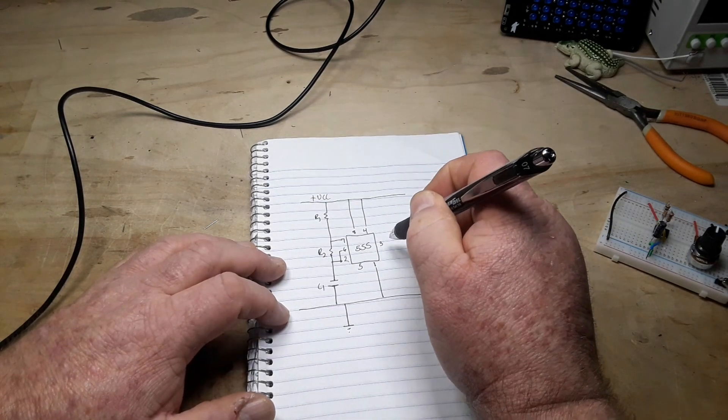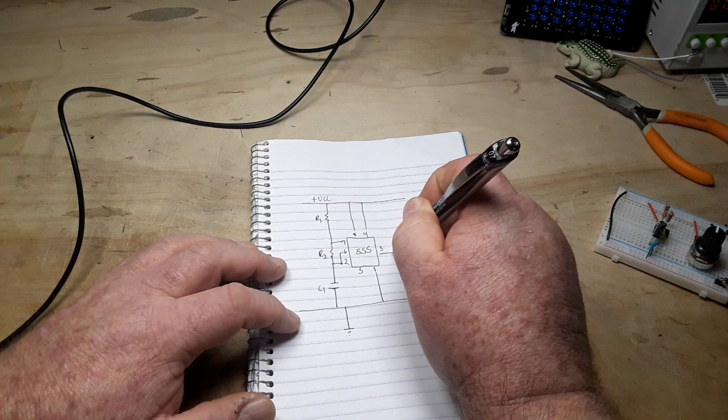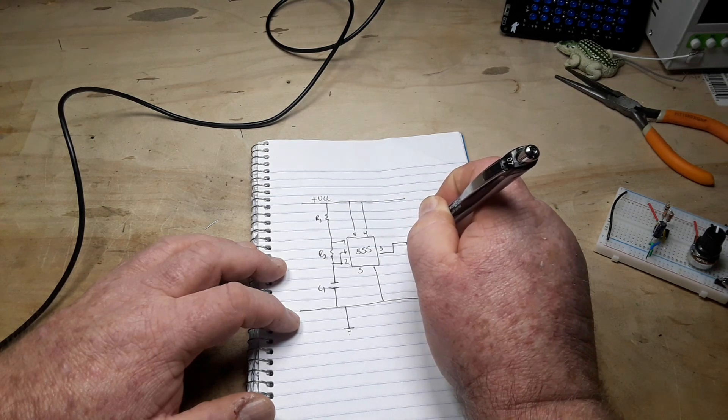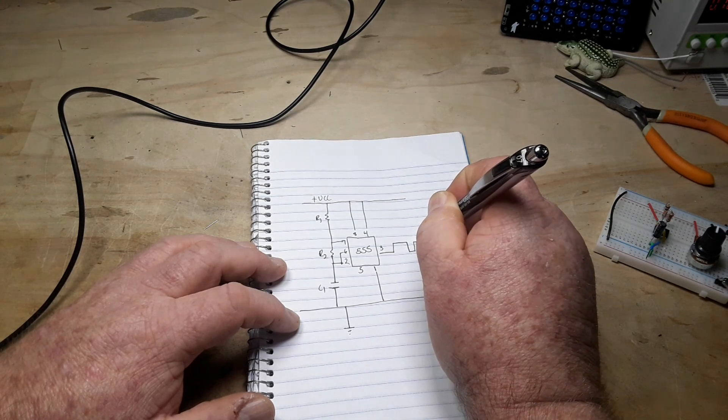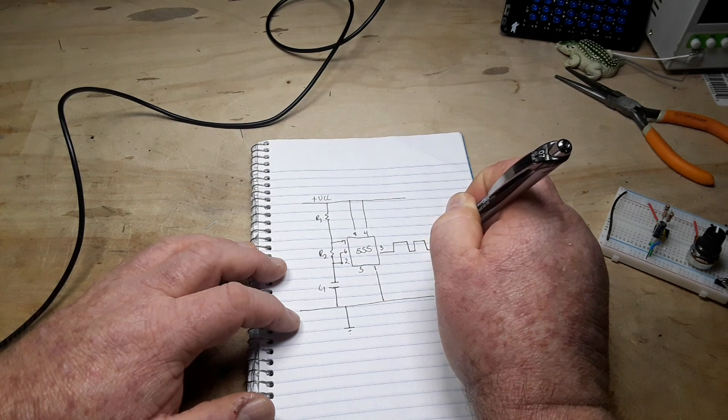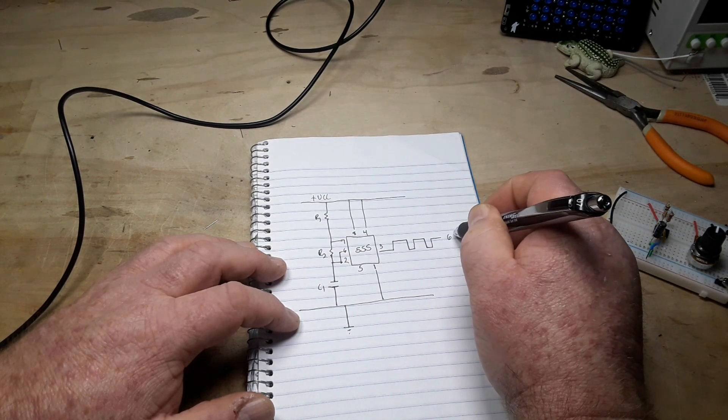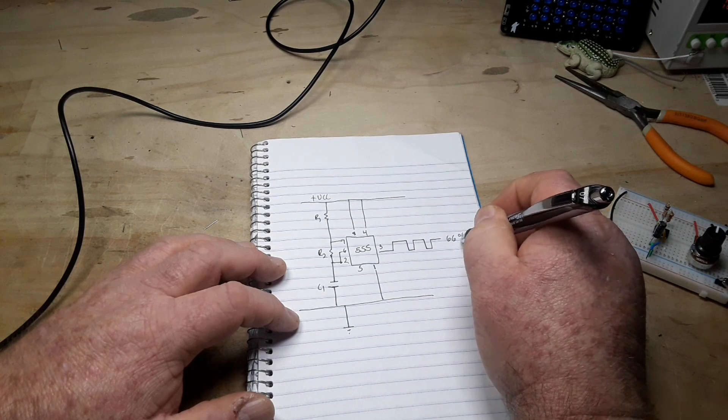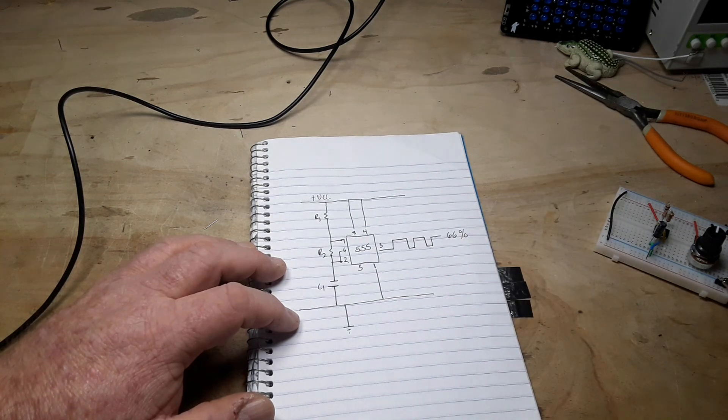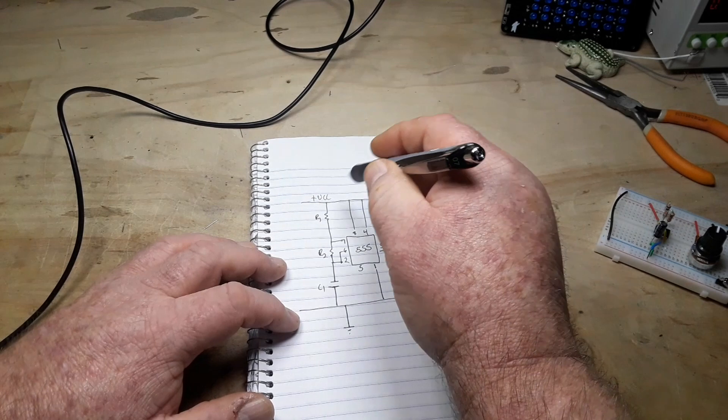This is going to give us a simple square wave output with a duty cycle of about 66%, assuming these values.